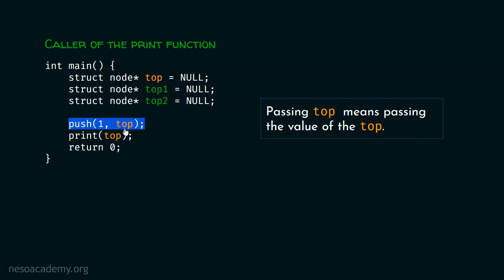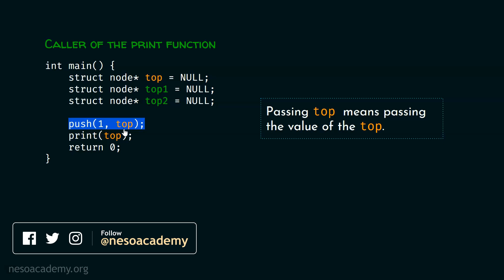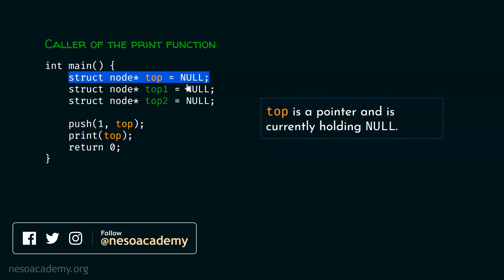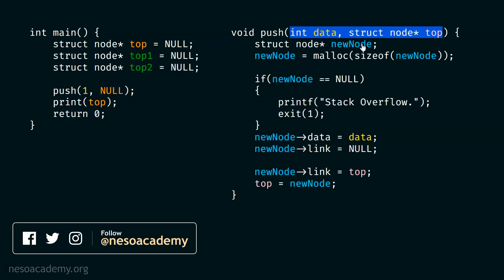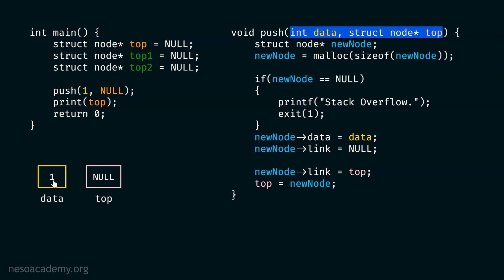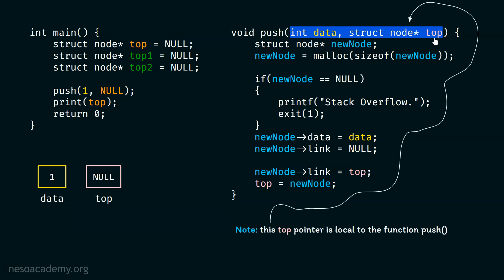Here, we are passing the value of top — in other words, we are passing the copy of top. Top is currently holding null, so null is passed to the push function. Inside the push function, this top pointer will receive null and data will receive one. This top pointer is local to the push function — we cannot confuse it with the top pointer in main. They are both different, although the name is the same. I have color coded them differently to avoid confusion.